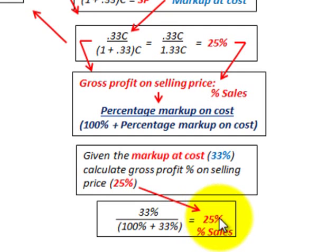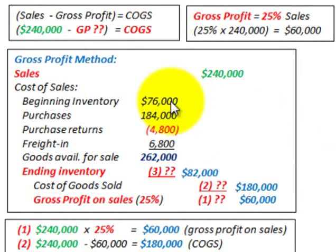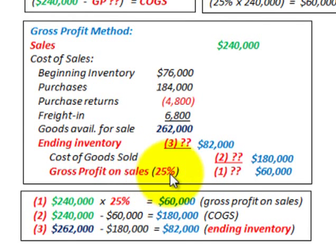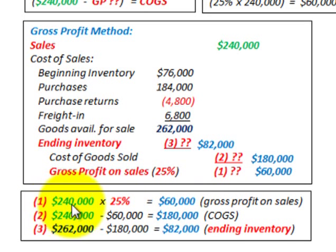That 25% is the number we work with when calculating our gross profit on sales. Our gross profit method is: sales minus gross profit equals cost of goods sold. We have sales of $240,000. Gross profit on sales at 25% is $240,000 times 25%, which equals $60,000. That's our gross profit on sales.